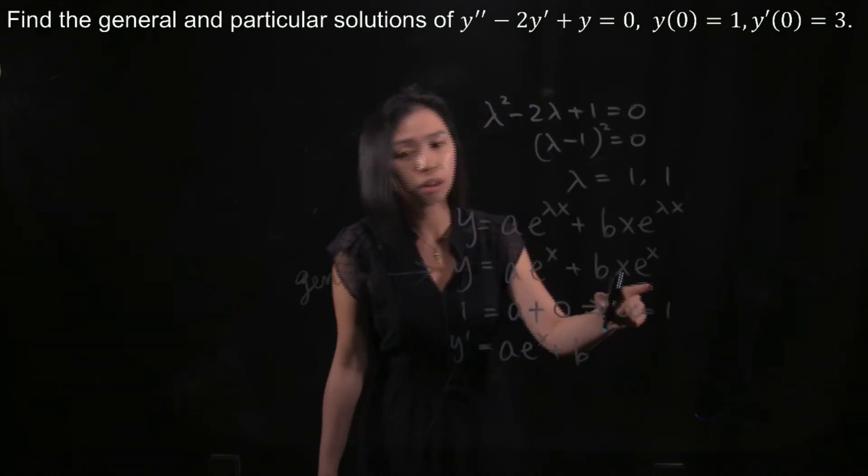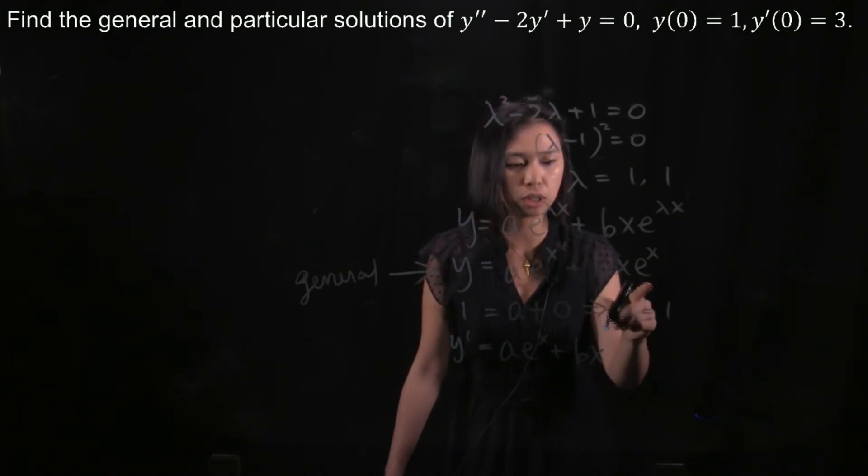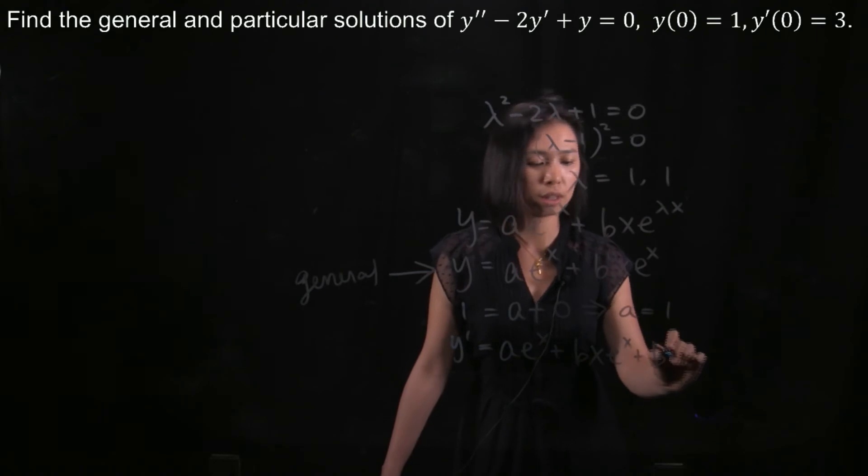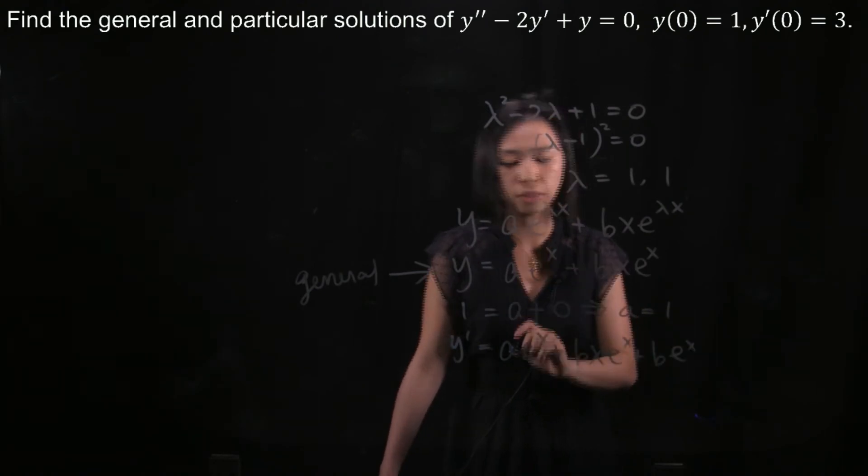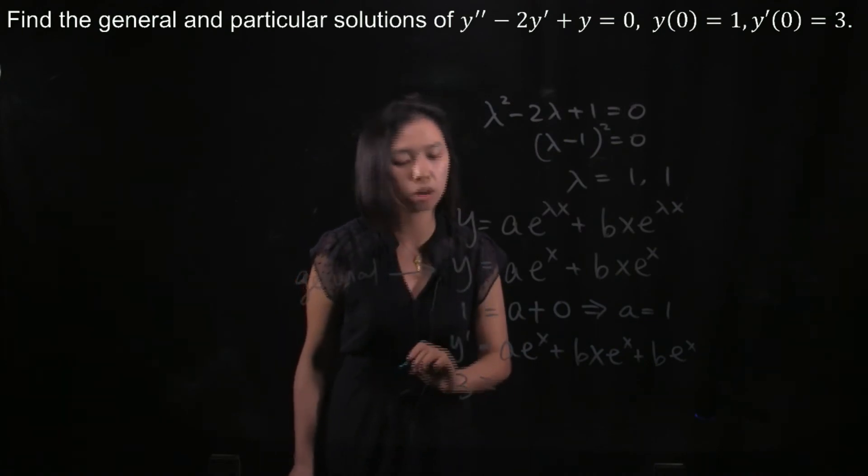Plus b, and then these two, you need to use the product rule. So I fix the x and differentiate the e^x, I get e^x. Plus, I fix the e^x and differentiate the x, I get 1. And then I substitute x to be 0, and your y' would be 3.